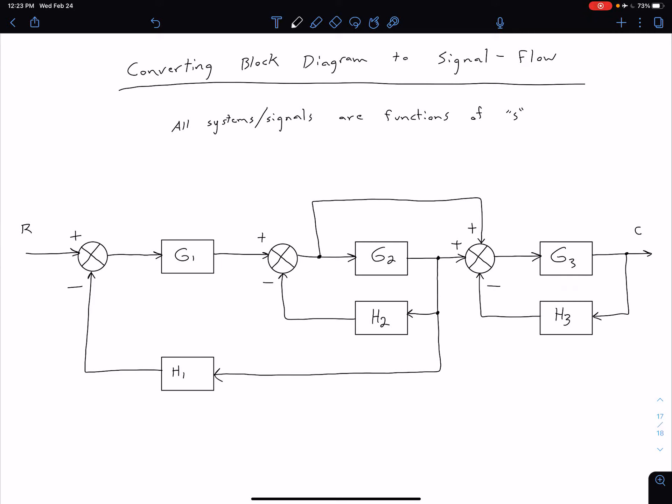In this video, we're going to look at how to convert a block diagram to a signal flow graph. Before we get started, I just want to mention explicitly that for our block diagrams and later our signal flow graphs, all of our signals and systems are explicitly a function of S.